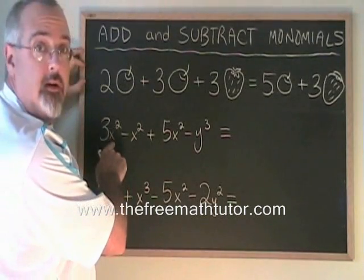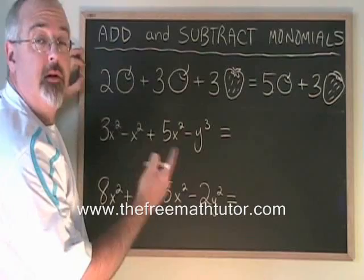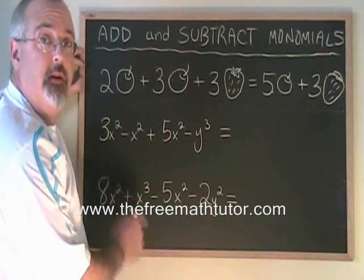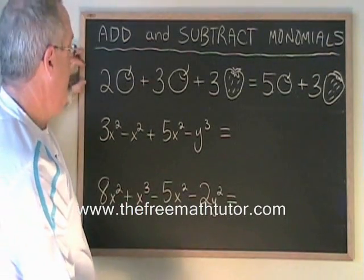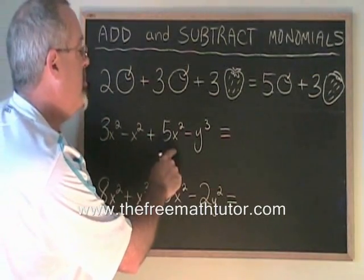We have to know that x² is not similar to x³. x² is not similar to y². They are as different as apples and strawberries. In this example, we have 3x² - x² + 5x² - y³.